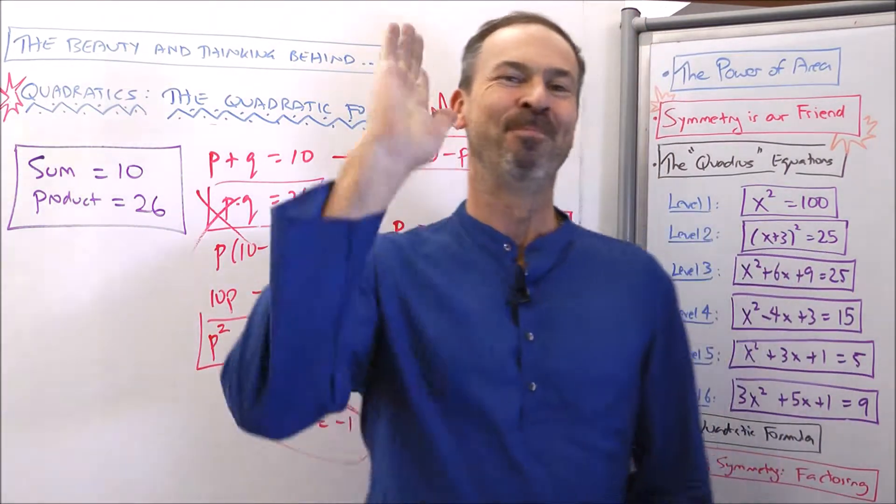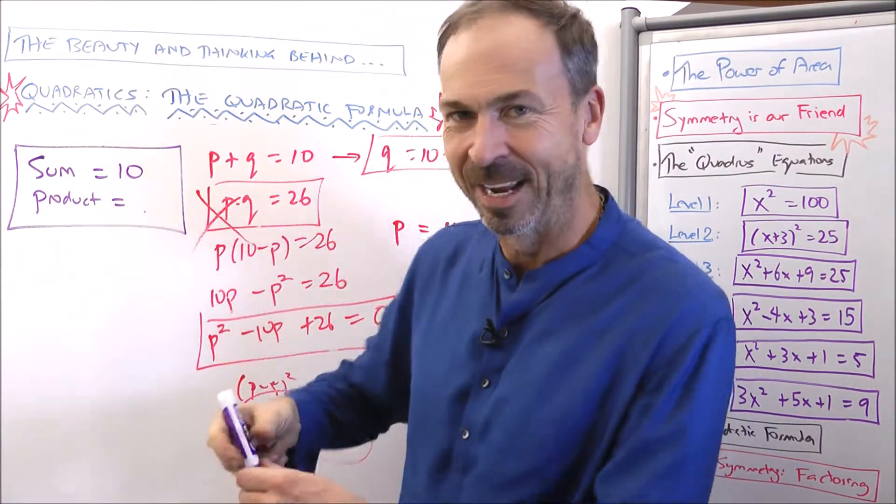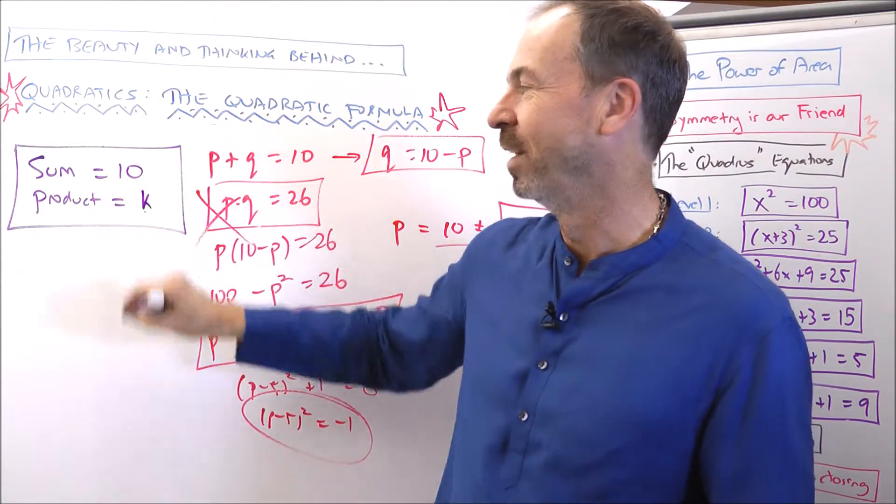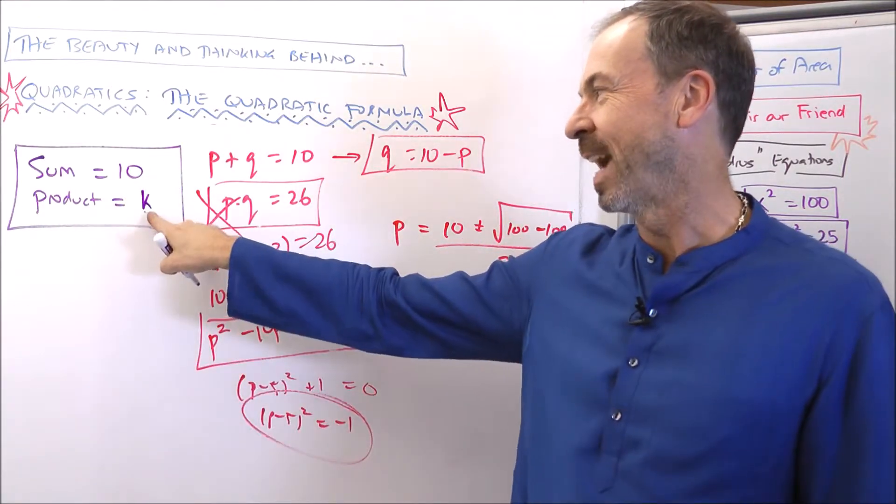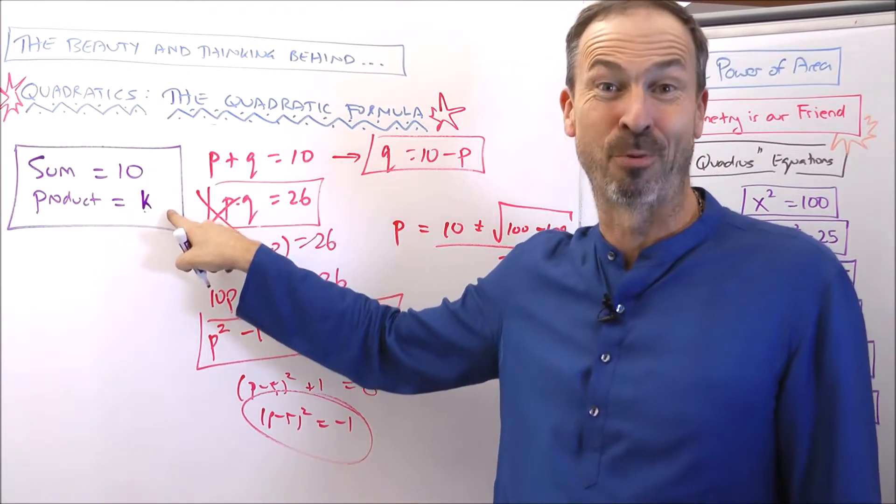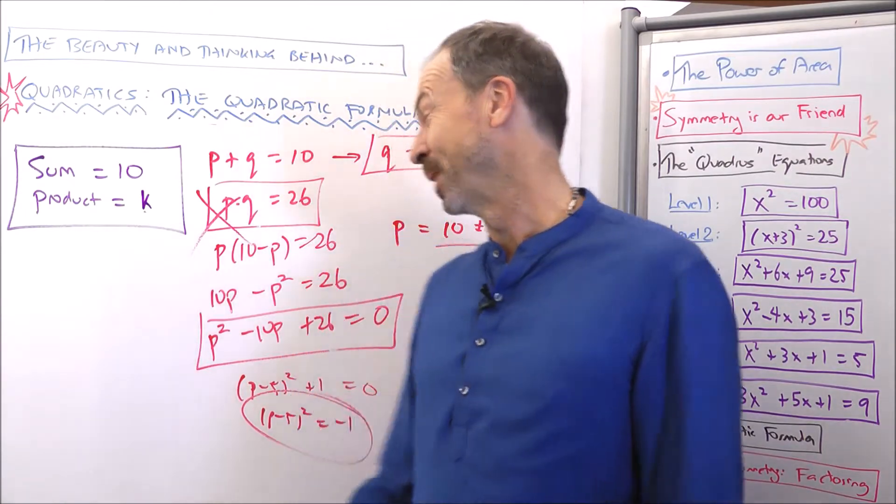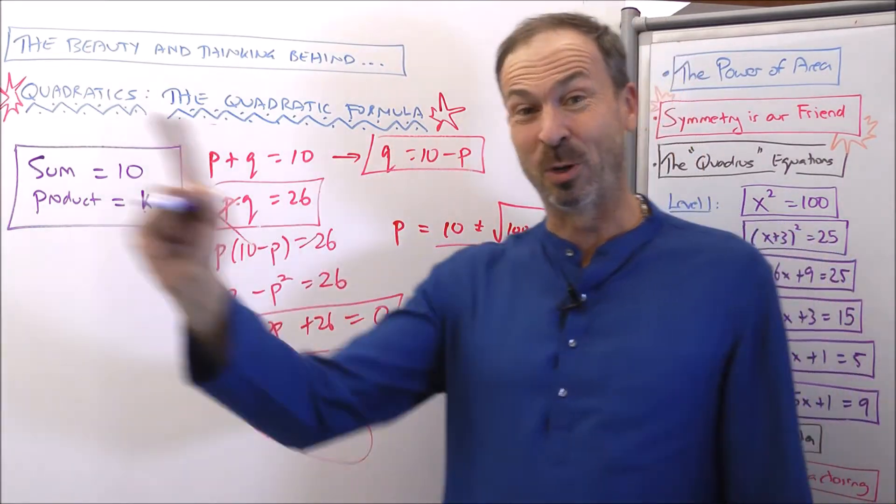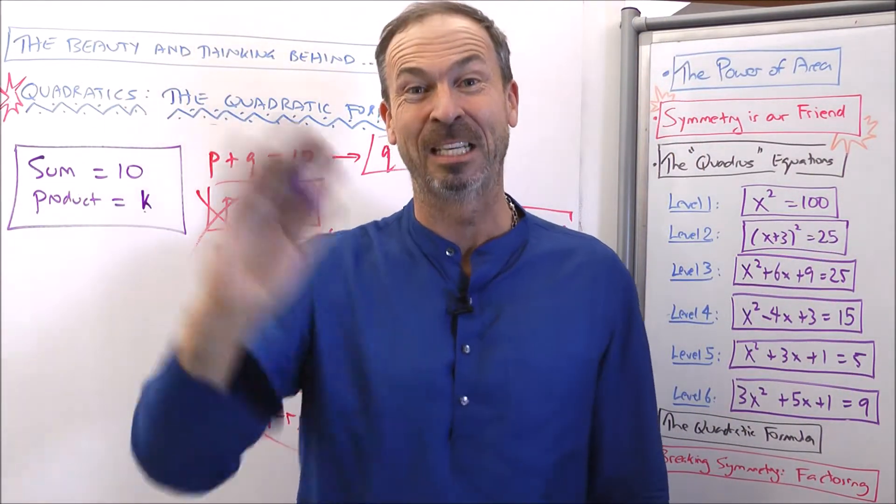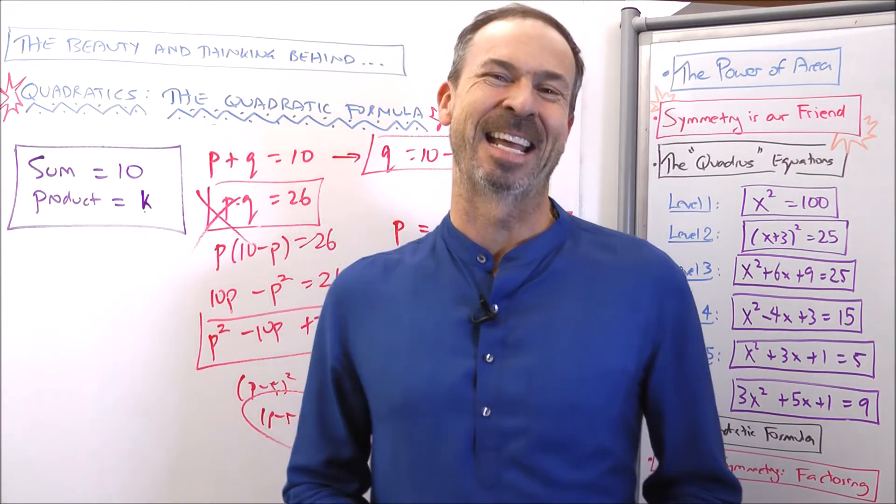Alright then, so here's the real question for you. For which values of K can this puzzle be solved? For which range of values of K is it possible to find a pair of numbers whose sum is 10 and product is K? What range is that going to be? 26 is out of that range. 25 and 24 were in that range. Give me the complete range. Ha! Alright, so I'll see you next time. This is good stuff.